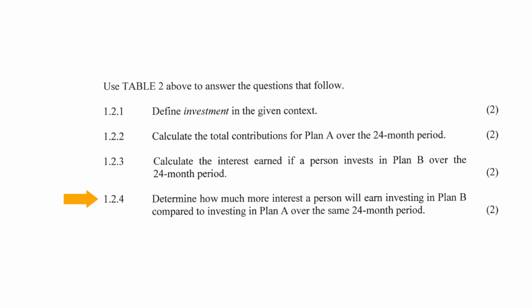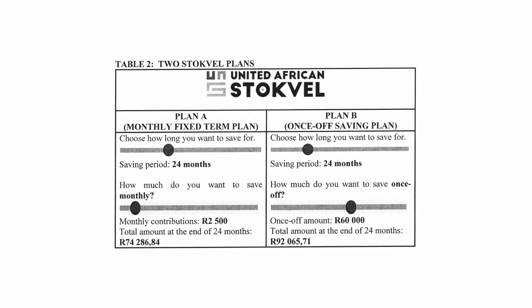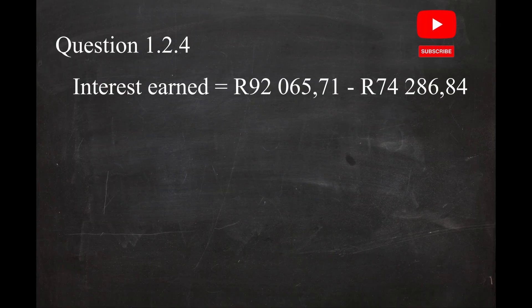In question 1.2.4, you have to determine how much more interest a person will earn investing in Plan B compared to Plan A over the same 24-month period. For both plans, a total contribution of R60,000 is required, but you will earn more money from Plan B. So the difference in total interest earned is R92,065.71 minus R74,286.84, which equals a difference of R17,778.87.